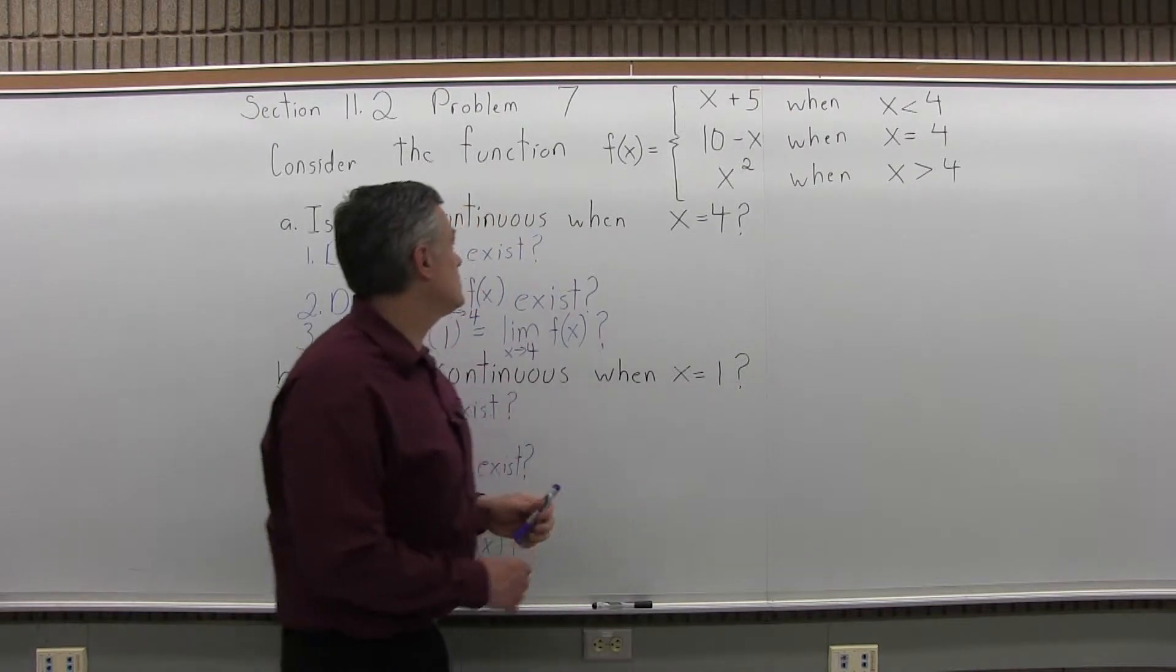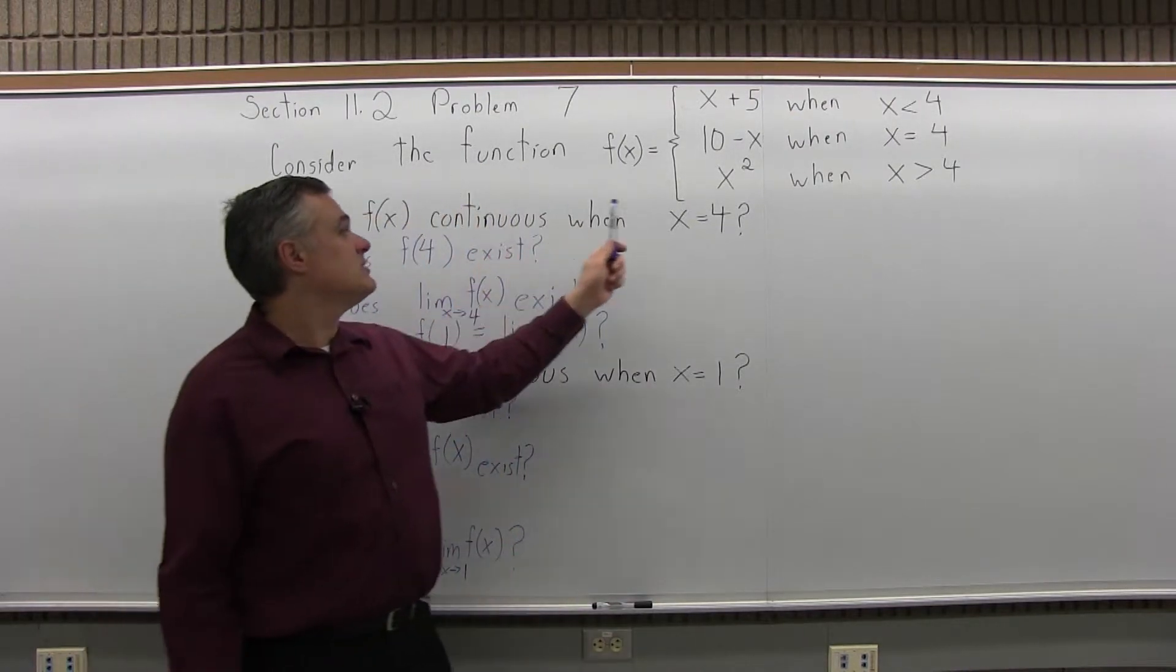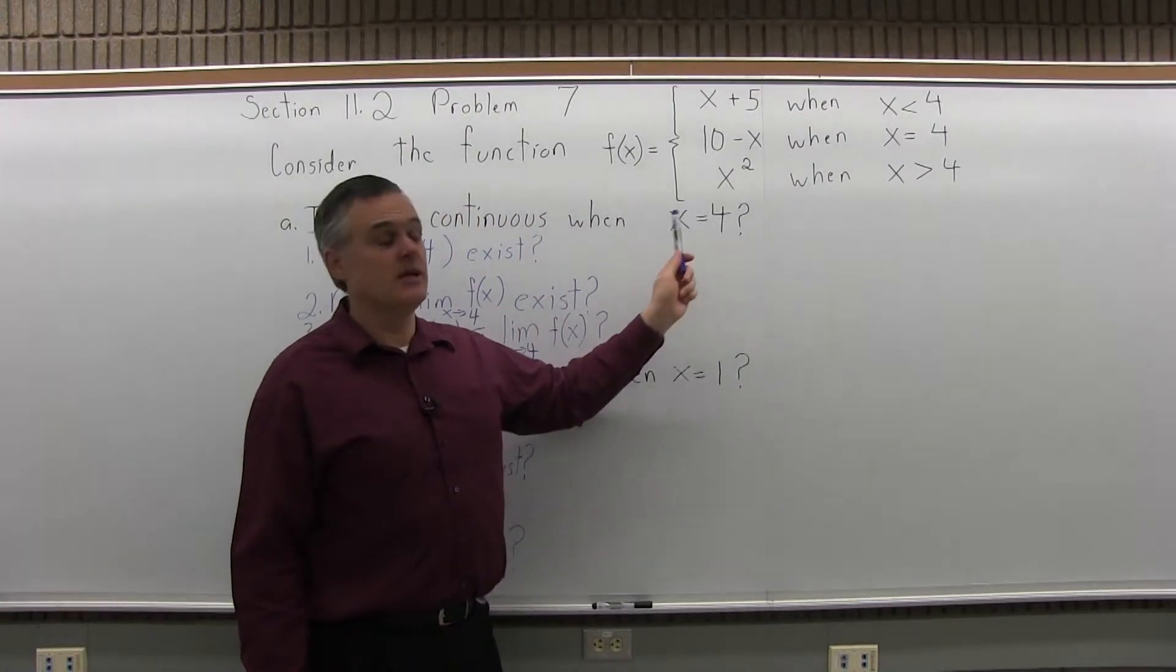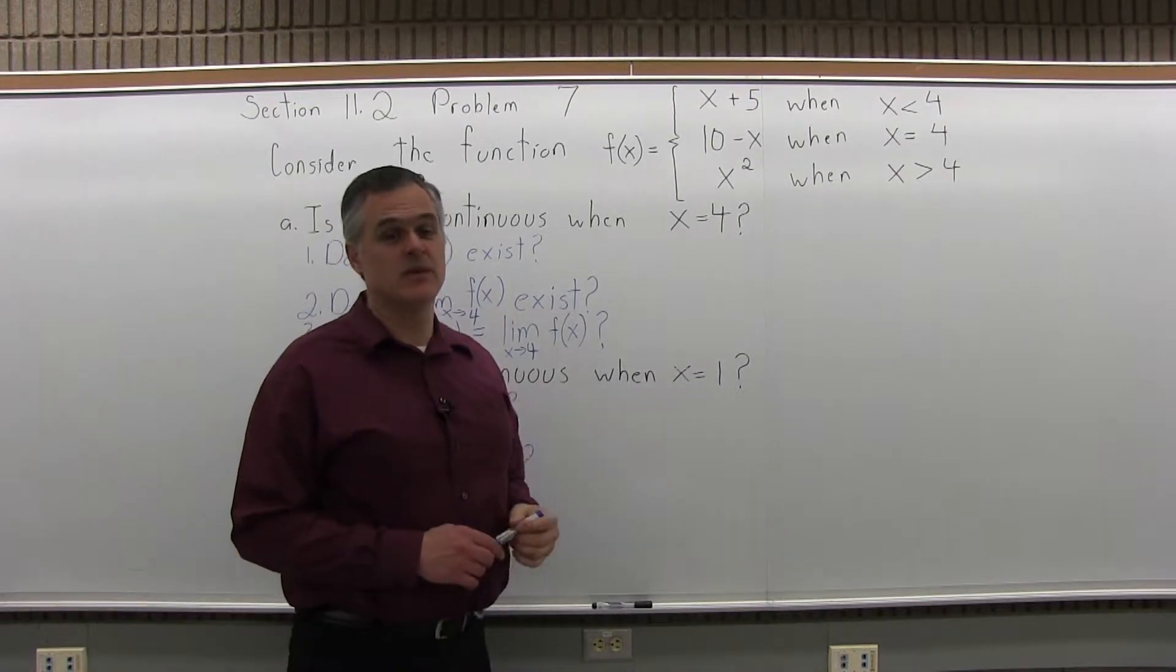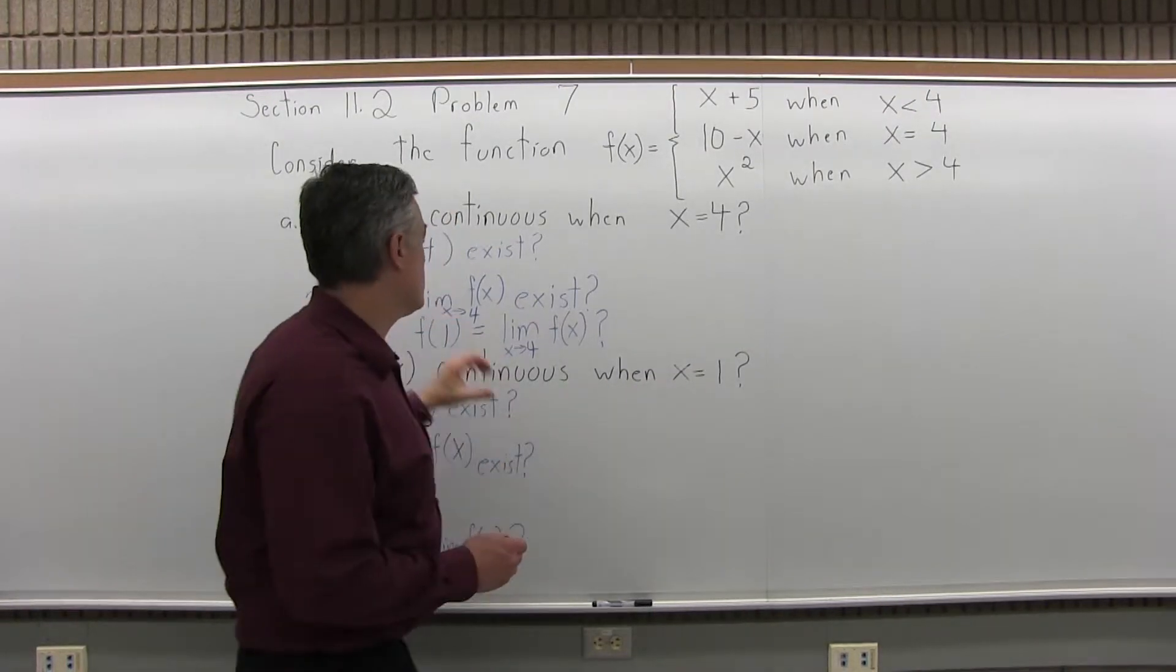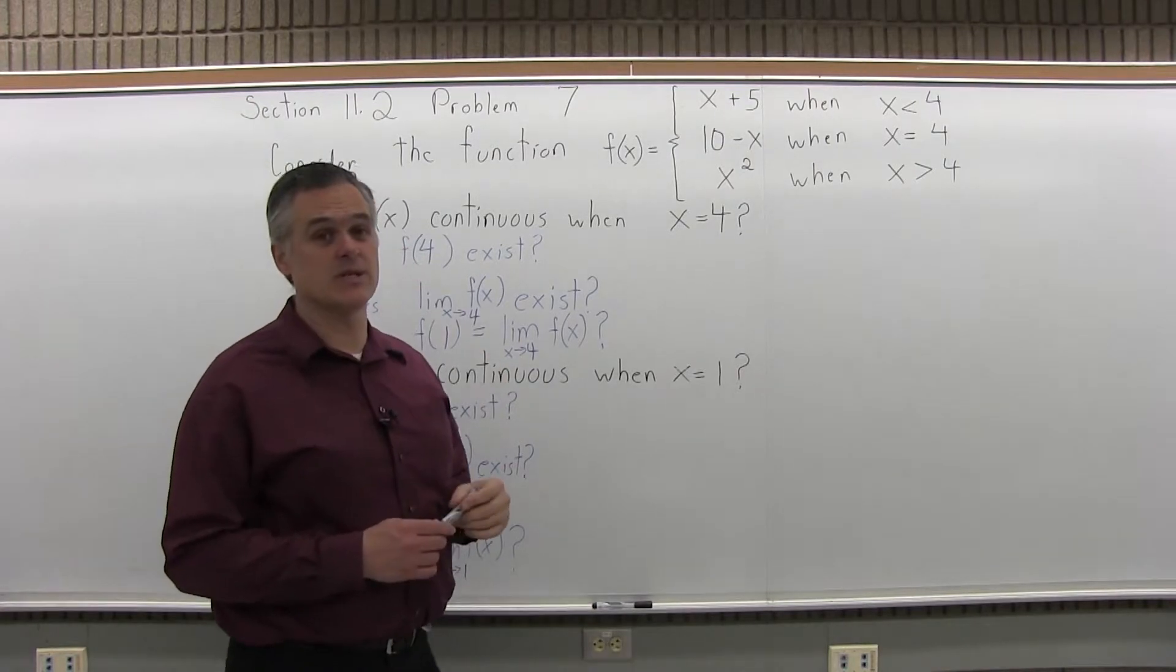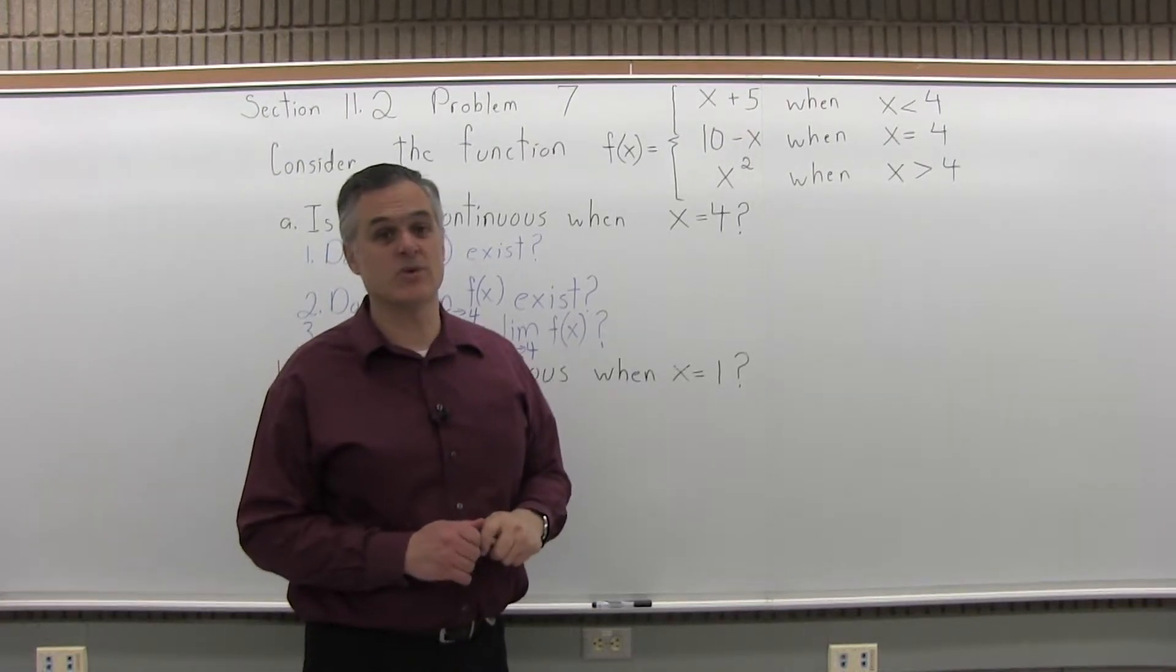So for that function, see if it's continuous when x equals 4, and then part b, see if it's continuous when x equals 1. For both, we have to consider the three questions that we always consider when we see if a function is continuous at any given point.